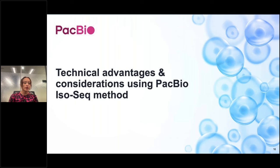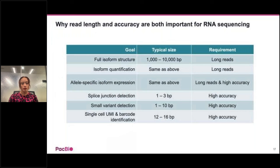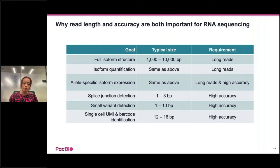Thinking about the goals for RNA sequencing helps explain why read length and accuracy are both important. For identifying full-length isoform structures, quantifying isoforms, or discovering allele-specific isoform expressions, long read lengths are required to capture the full isoform, whereas accuracy is required to call variants for allele specificity. For splice junction detection, variant detection, and single-cell UMI barcode identification — which are much smaller signatures — high accuracy is required.